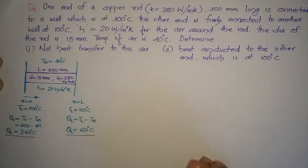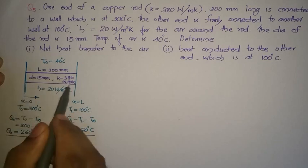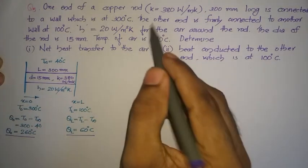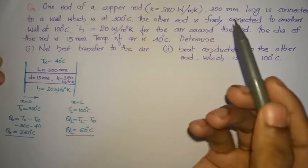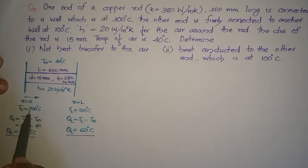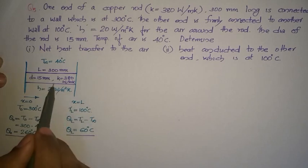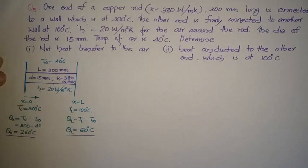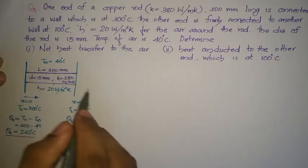In this video we will be solving the problem from Case 4, where the surfaces of a fin are maintained at different specified temperatures. We have a copper rod with thermal conductivity 380 W/m·K, 300 mm long, connected to one wall at 300°C and another wall at 100°C. This circular fin rod is exposed to an atmosphere of 40°C with a convective heat transfer coefficient of 20 W/m²·K.